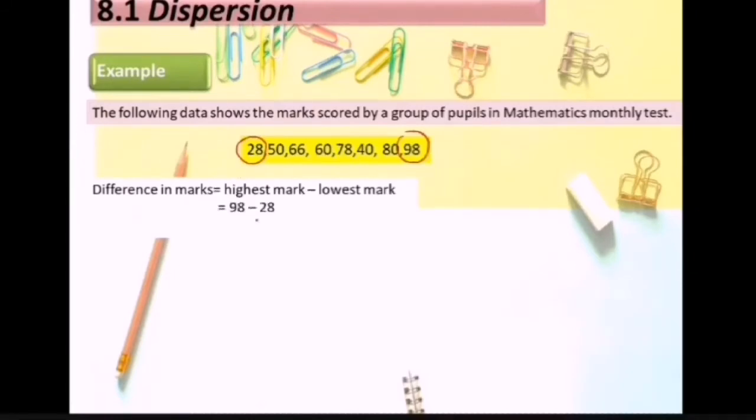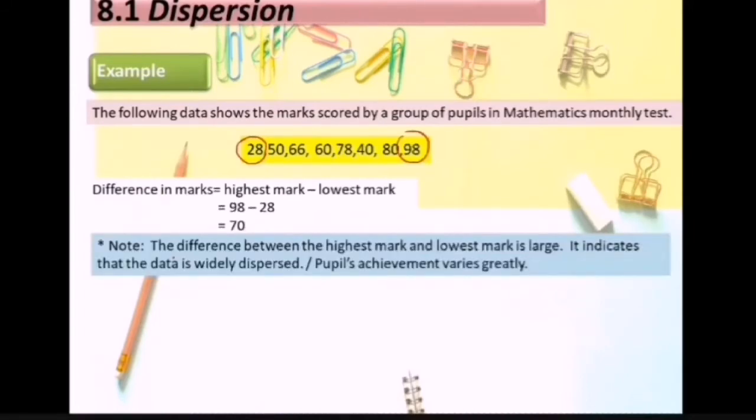Equal to 98 minus 28, equal to 70. The difference between the highest mark and lowest mark is large. It indicates that the data is widely dispersed. Pupils' achievement varies greatly.